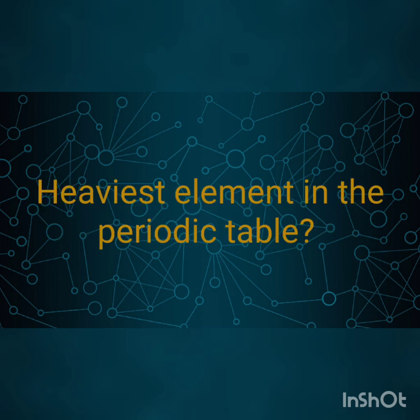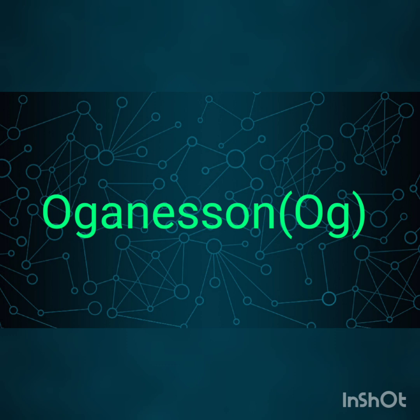Question number 6: Which is the most abundant element in the periodic table? Oganesson, which is recently discovered and has atomic number 118 and a mass of about 300.